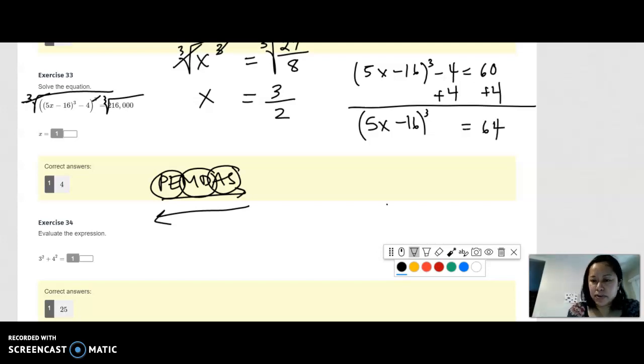Again you have an exponent that you want to get rid of, so you want to do the inverse of cubing, which is cube root. So cube root both sides again. This goes away, your exponent goes away. You get 5x minus 16 equals the cube root of 64, which is 4. Then we're going to add 16 on both sides.